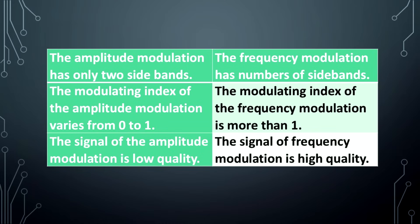The modulating index of amplitude modulation varies from 0 to 1. The modulating index of frequency modulation is more than 1. The signal of amplitude modulation is low quality; the signal of frequency modulation is high quality.